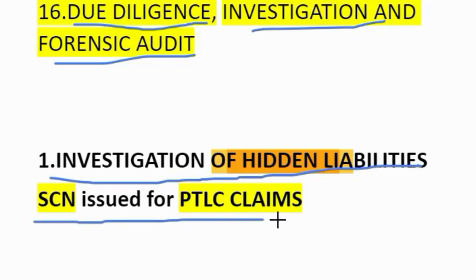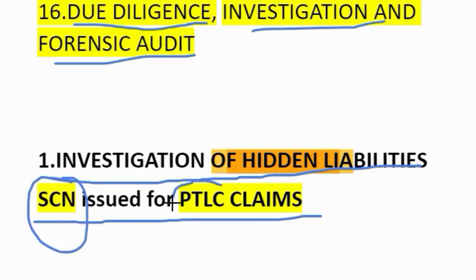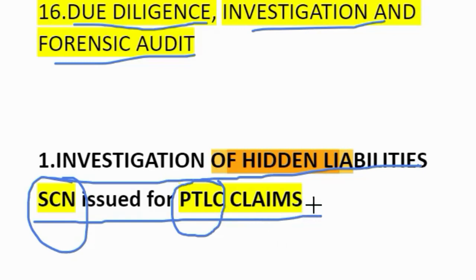SCN issued for PTLC claims. What is showcase notice? Any showcase notice which has not matured into demands but may be material and important. SCN completed. Next, PTLC: P stands for product and warranty liabilities, product returns and discounts, liquidated damages. T for tax liability under direct and indirect taxes. L for long pending sales tax assessment. C stands for contingent liability not shown in books. PTLC completed. Now claims — claims ignored by the company including third party claims.